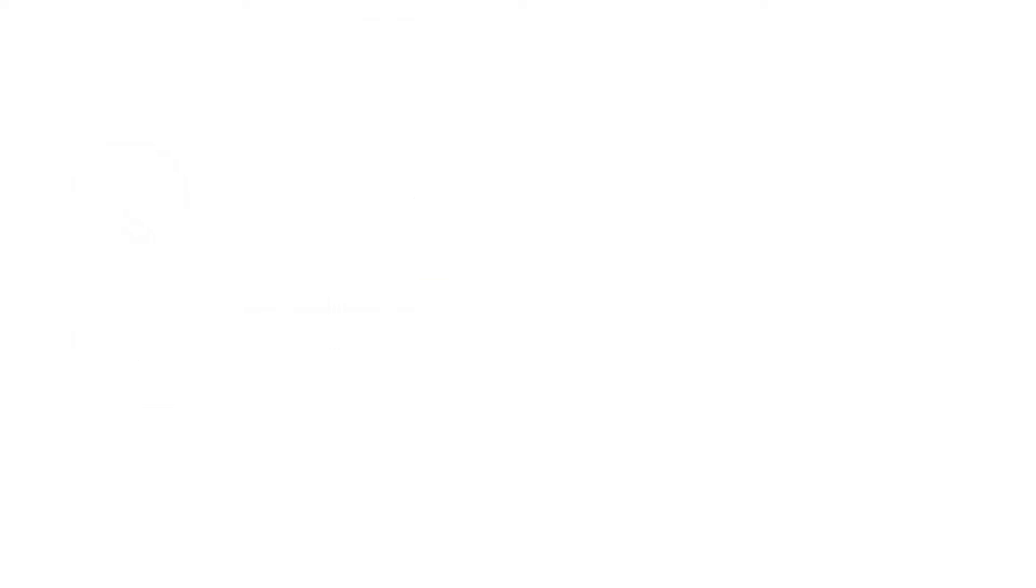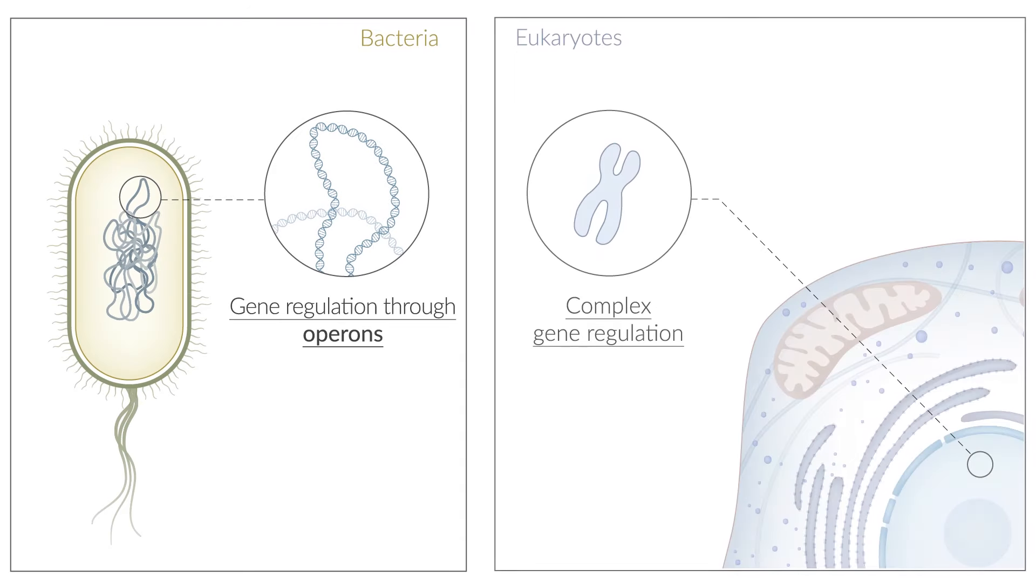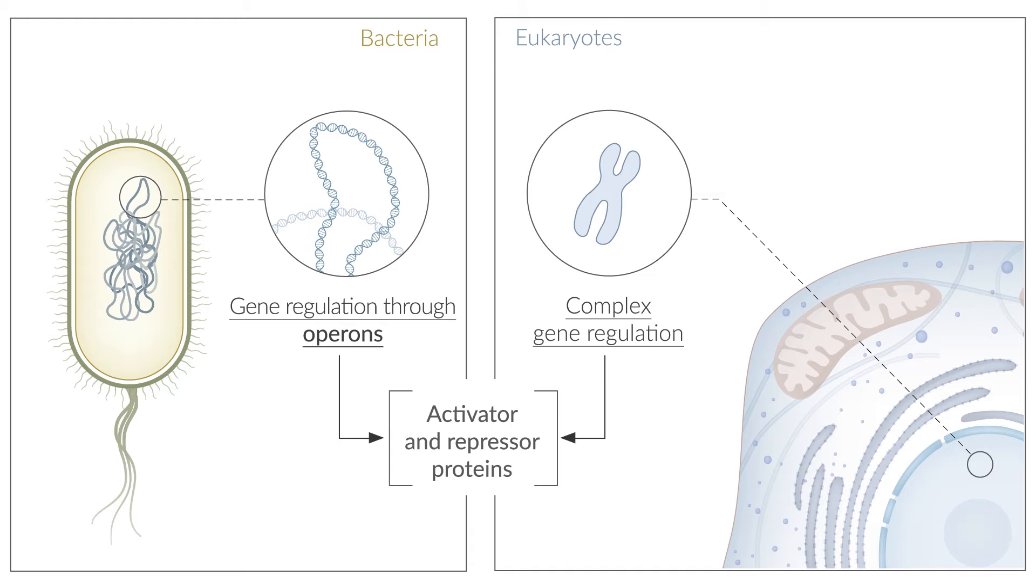In bacteria, genes are regulated by operons. Although the regulation of gene expression in eukaryotes is considerably more complex, it's based on the same concepts as, for example, the use of activator and repressor proteins.